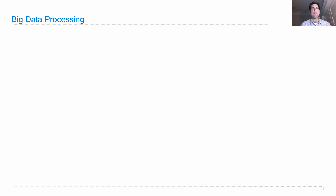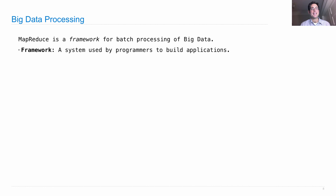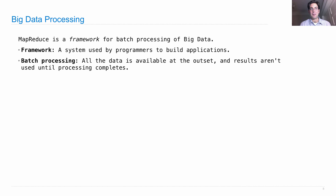So what's MapReduce? MapReduce is about big data processing. It's a framework for batch processing of large datasets — a framework meaning some system used by programmers to build applications, as opposed to by users who don't know how to program. Batch processing means that we have a ton of data that's all available at the outset, and results aren't really needed until the processing completes. So we're just going to do one big processing as a batch of information, and then we'll be done.